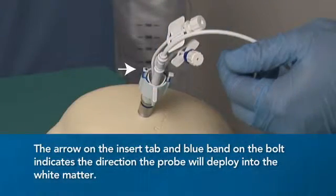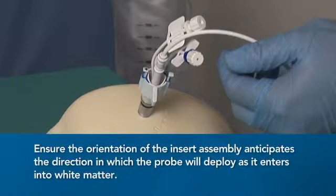The arrow on the insert tab and blue band on the bolt indicates the direction the probes will deploy into the white matter. Ensure the orientation of the insert assembly anticipates the direction in which the probes will deploy as it enters into white matter.